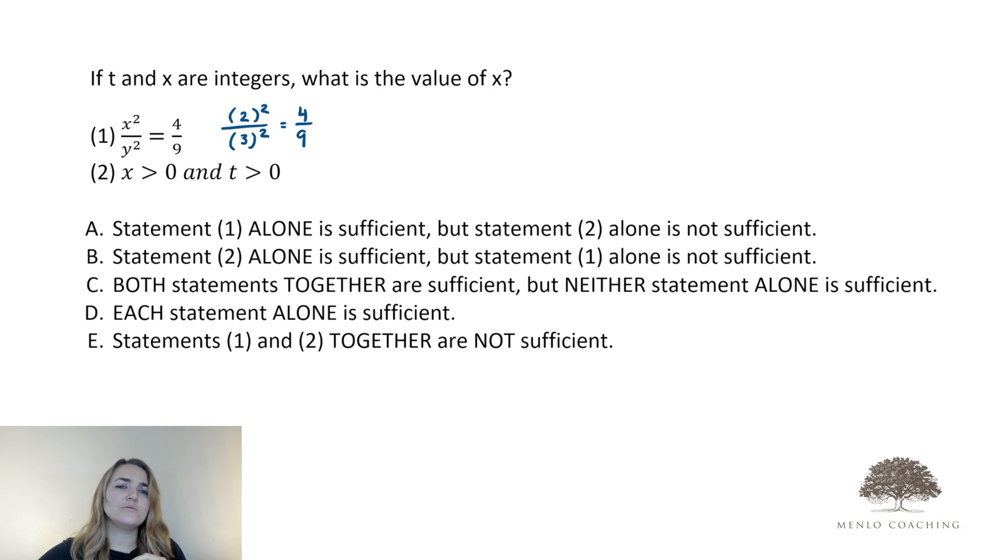And whether you took a sneak peek from statement 2 or maybe you were already thinking positive negative number properties, most students will also recognize that we've got the potential for some negative values. I could also have something like negative 2 over negative 3 also getting me to 4 over 9. And for many students, the analysis stops there.